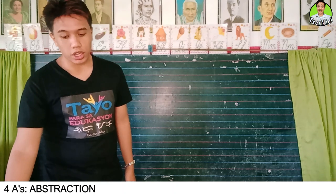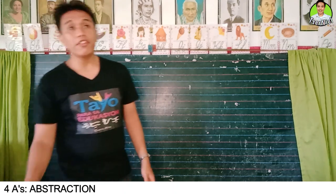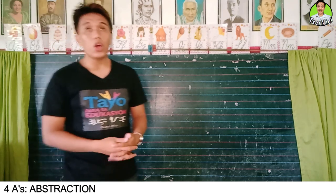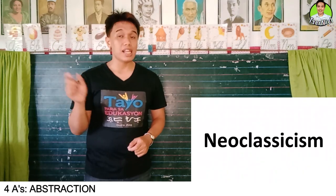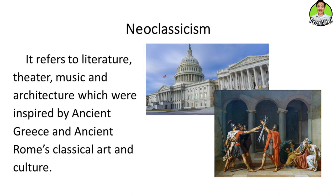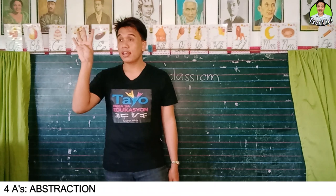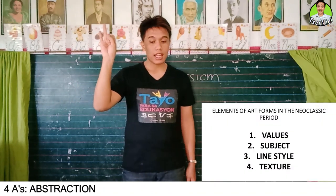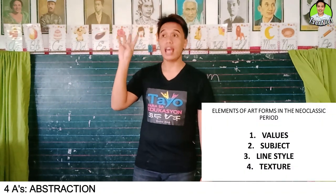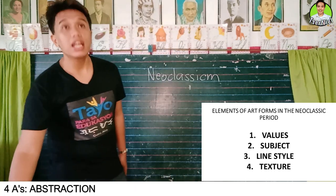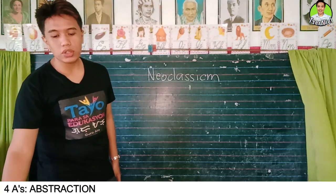The paintings and sculpture in our activity came from a western trend called Neoclassicism. Neoclassicism refers to the literature, theater, music, and architecture which were inspired by ancient Greece and ancient Rome's classical art and culture. Today we will only focus on four elements: the role of art, subject, line style, and texture. Based from the activity, let us examine the observations from each painting.